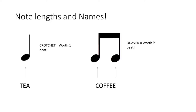These are the first two notes that we are going to explore and recap. The first one is a crotchet. This is worth one beat and we often use the word 'tea' to describe the rhythm of this note. The second one is a quaver. This is worth half a beat — we need two of these joined together to make one whole beat. We often use the word 'coffee' to describe the rhythm of this note.